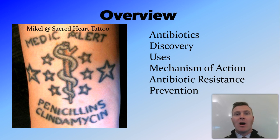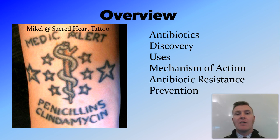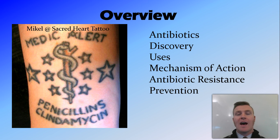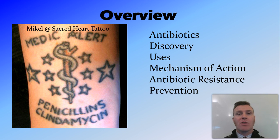In this video we've talked about antibiotics — compounds produced by living microorganisms that inhibit or kill other microorganisms. We've covered the discovery by Alexander Fleming and its further research by Florey and Chain for human use. We've discussed how antibiotics can only be used for bacterial infections, not viral infections; the mechanism of action; antibiotic resistance caused by mutation and how quickly it spreads; and how resistance can be prevented by not taking antibiotics unnecessarily and taking the prescribed dose for the prescribed time.